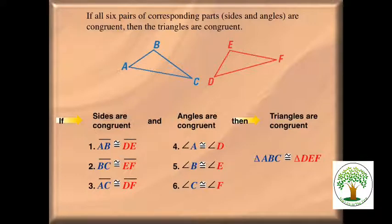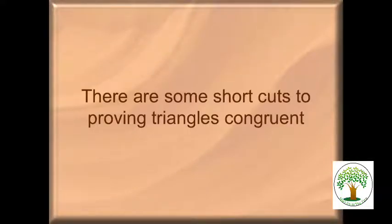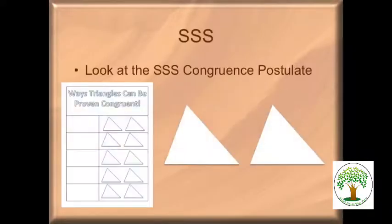A moment ago you did a construction — I asked you to copy one triangle onto the other. Did you measure any angles? You measured three sides. So if I gave you three toothpicks of different sizes and put them together, and did the same with three toothpicks of the same sizes, you'd get the same triangle no matter what. That's the shortcut — it's called SSS, which stands for side, side, side.